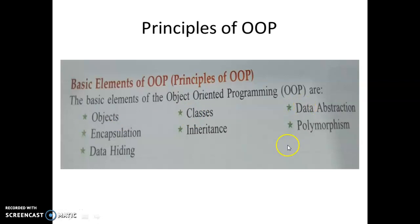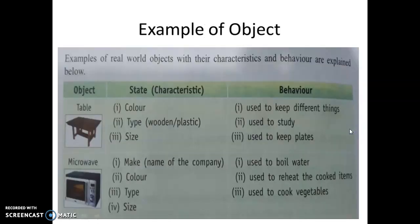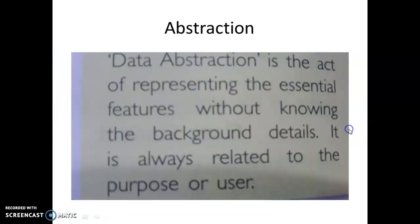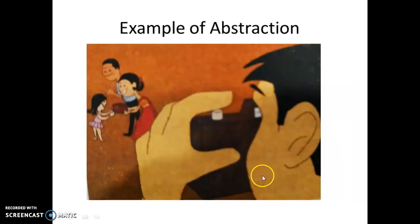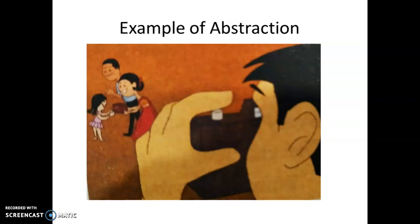Now I want to discuss Data Abstraction. What is Data Abstraction? Data Abstraction is the act of representing the essential features without knowing the background details. It is always related to the purpose or user. Suppose if you want to capture a photograph using a camera, then you know how to do it — how to press the button and what to do. But you don't know what is the technology behind it. That means we know only the essential parts without knowing the background details.